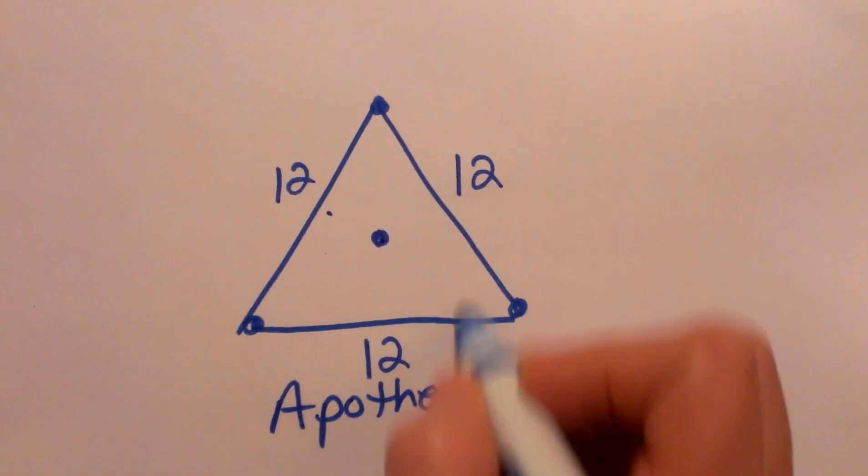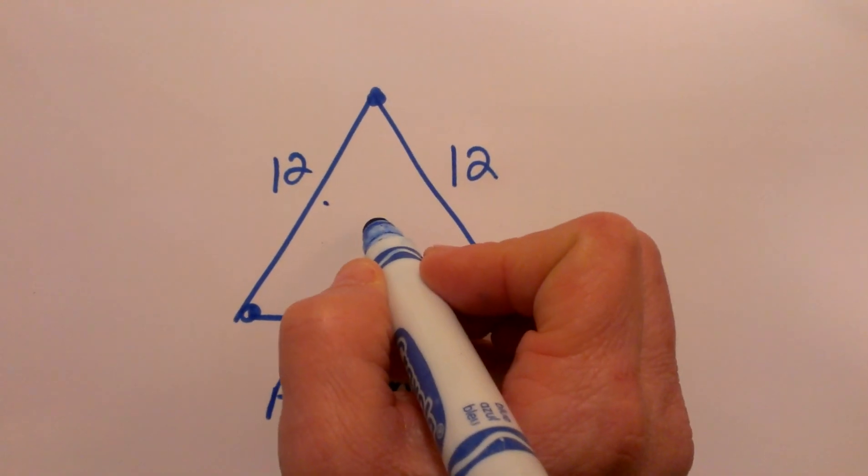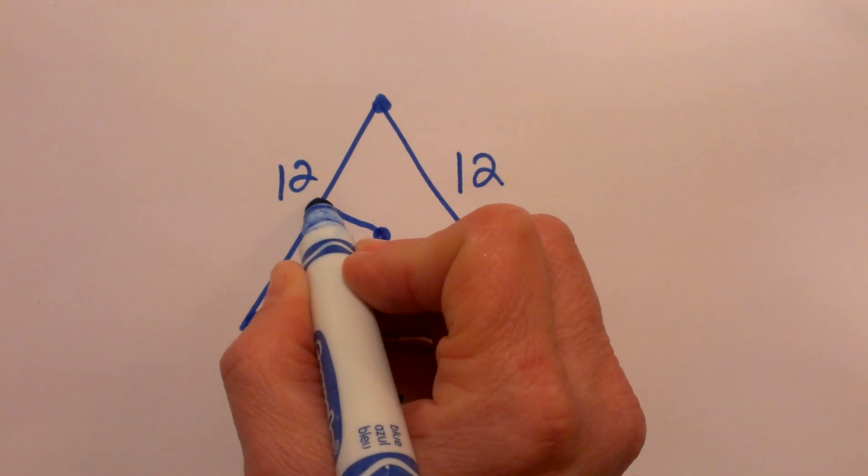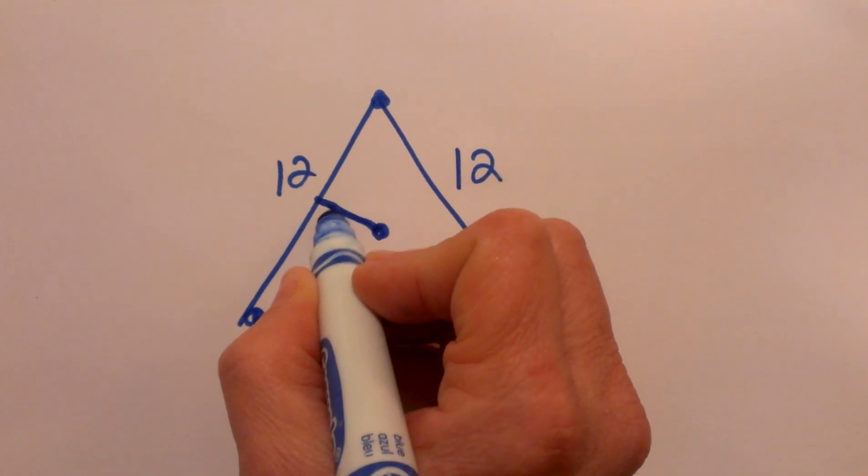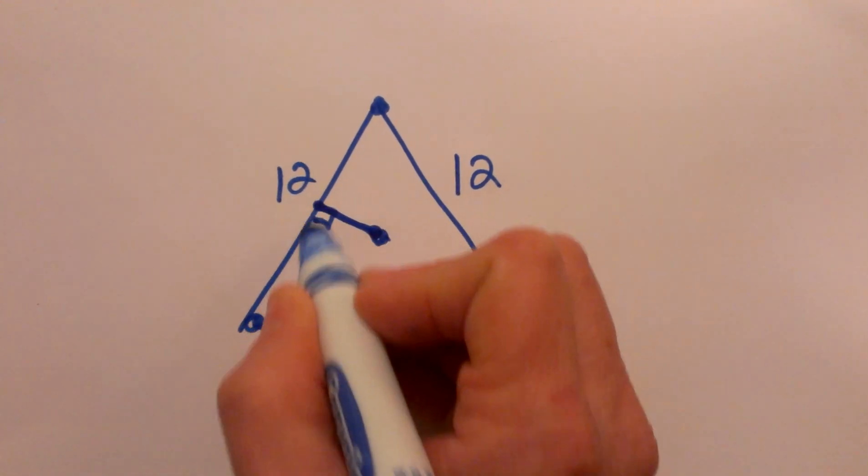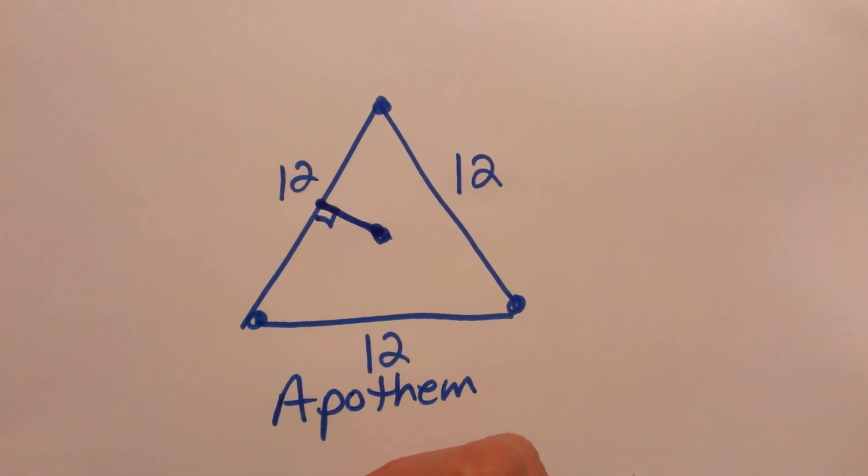From the center of this equilateral triangle, I am going to find the distance from the center to the side, and that is actually the closest distance, so I am going to draw that and it is going to be a right angle. This is the shortest distance from the center to the side. That is the apothem.